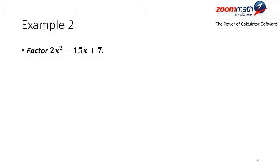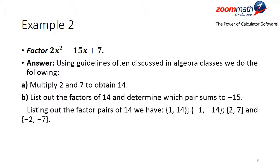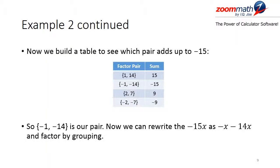Our next example asks us to factor 2x squared minus 15x plus 7. Following guidelines often discussed in algebra classes, we multiply 2 and 7 to obtain 14, then list the factor pairs of 14 and determine which pair sums to negative 15. The factor pairs are: 1 and 14 (sum: +15), negative 1 and negative 14 (sum: -15), 2 and 7 (sum: 9), and negative 2 and negative 7 (sum: -9). So negative 1 and negative 14 is our pair.